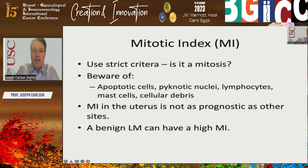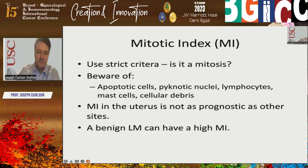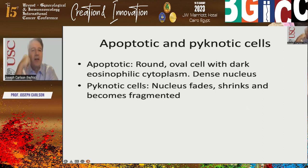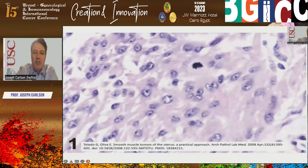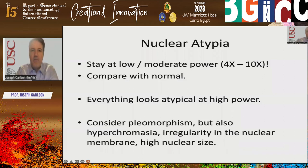For mitotic index, we want to use strict criteria. We want to be aware of apoptotic cells, pyknotic nuclei, and lymphocytes. The mitotic index in the uterus is not as prognostic as it is at other sites — a benign leiomyoma can have a high mitotic index. Apoptotic cells are typically round oval cells with dark eosinophilic cytoplasm and dense nuclei. Pyknotic cells have a nucleus that fades, shrinks, and becomes fragmented.